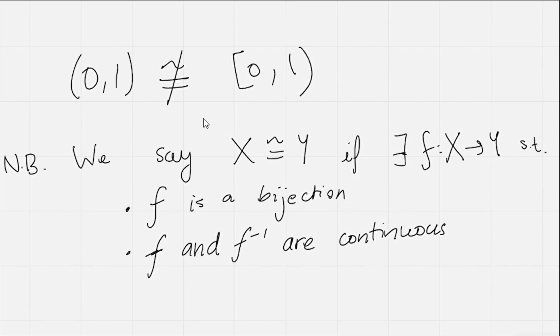And now, if you're not too sure what I mean by homeomorphic, we say that two sets X and Y are homeomorphic (that's what this notation means, X is homeomorphic to Y) if there exists some function f from the set X to Y, such that f is a bijection, so that means it's injective and surjective, and f and f-inverse are continuous functions.